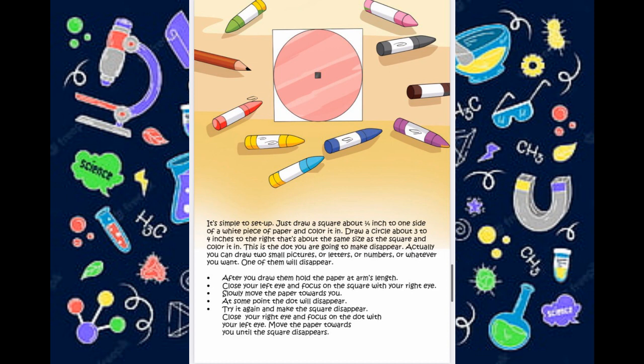It's simple to set up. Just draw a square about one quarter of an inch to one side of a white piece of paper and colour it in. Draw a circle about three to four inches to the right. That's about the same size as the square and colour it in. This is the dot you're going to make disappear. Actually,